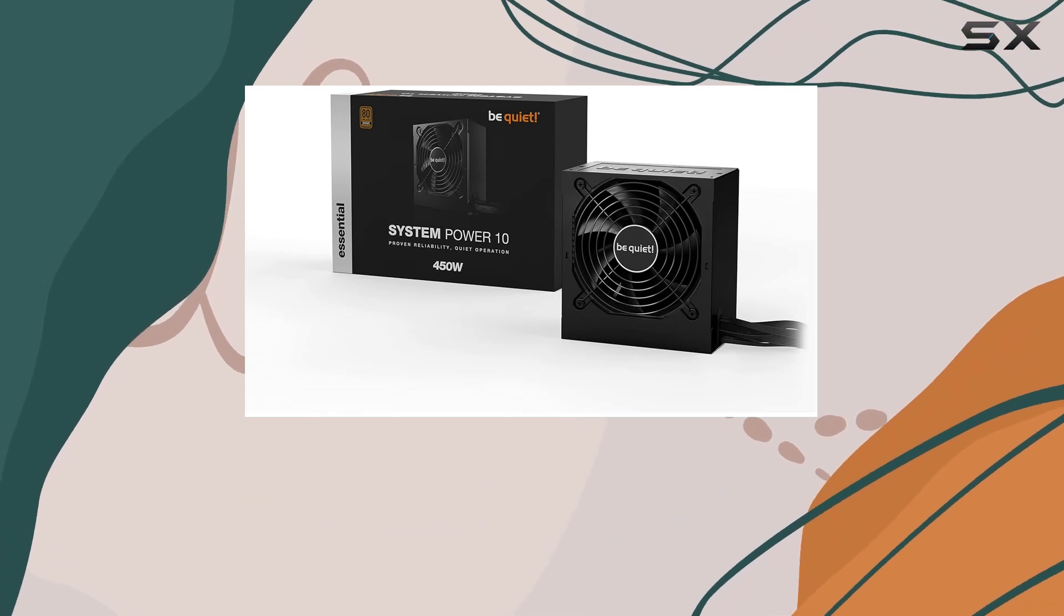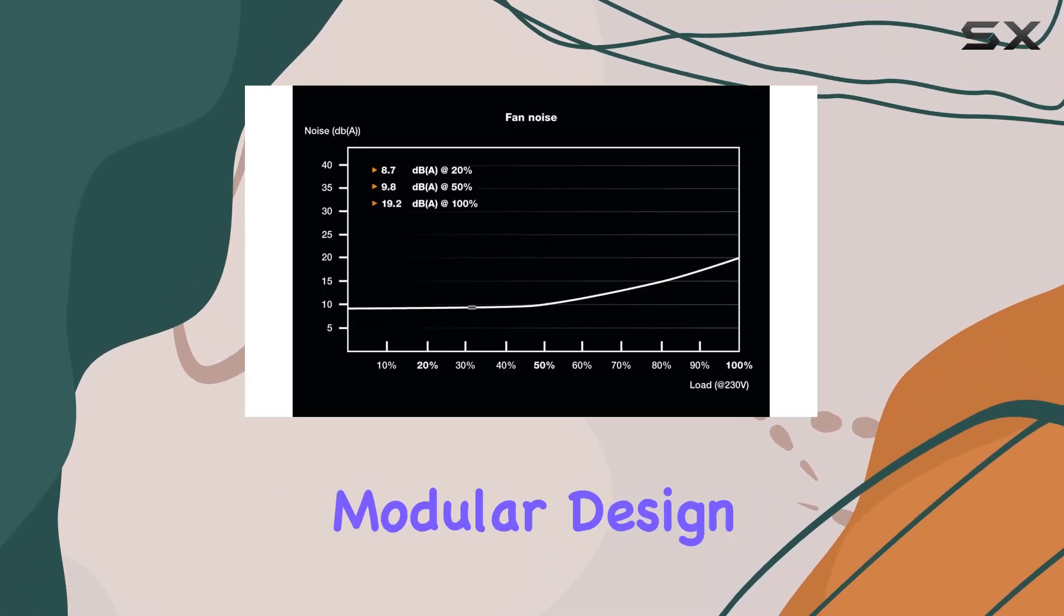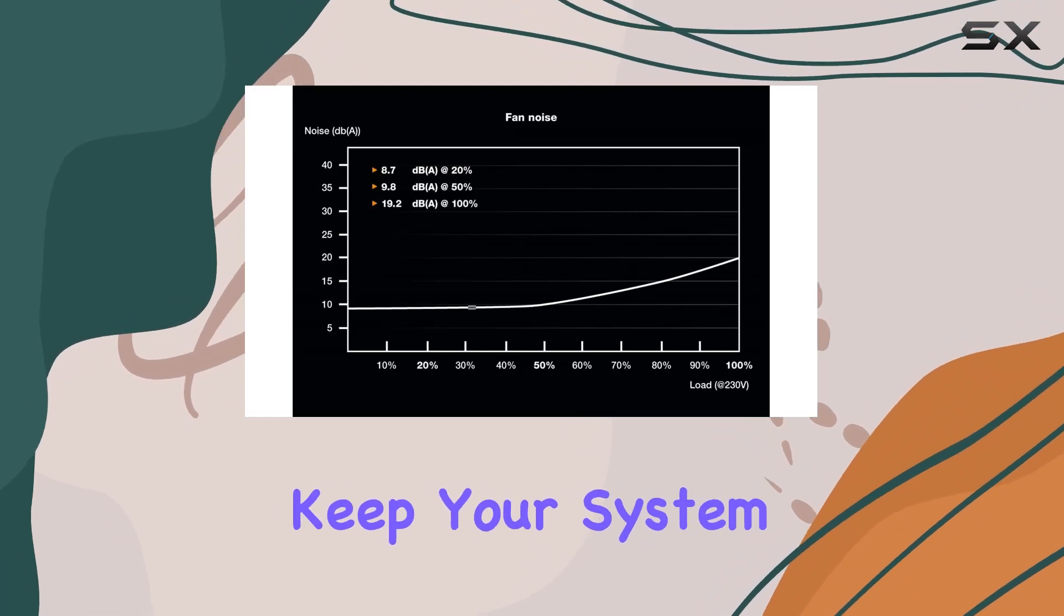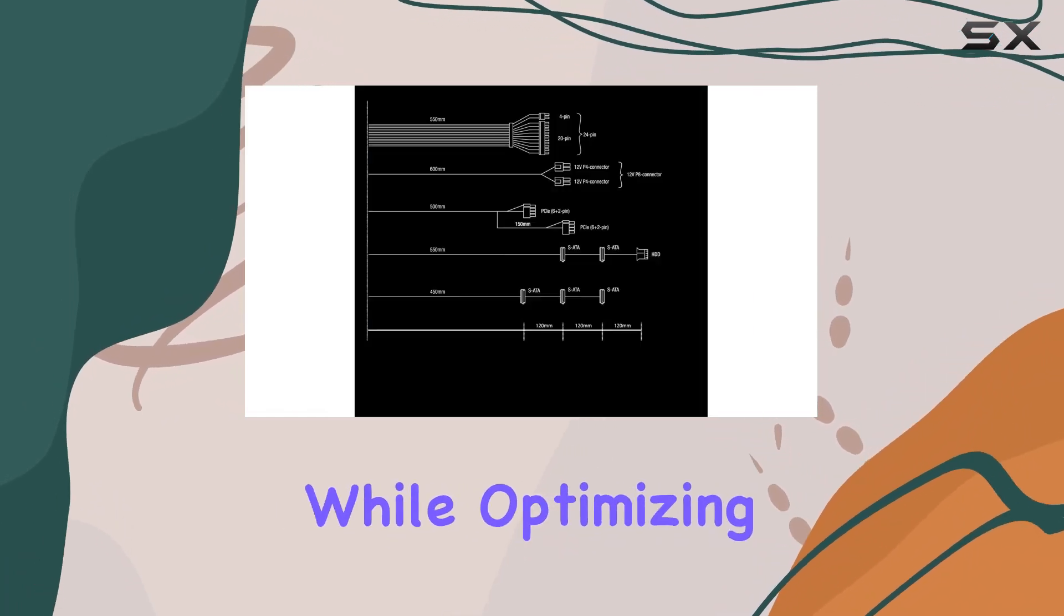Installation is a breeze with the System Power 10. Its modular design allows for easy cable management, helping you keep your system neat and tidy while optimizing airflow.